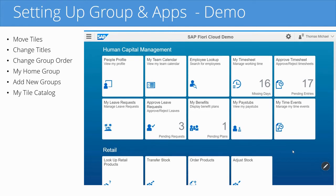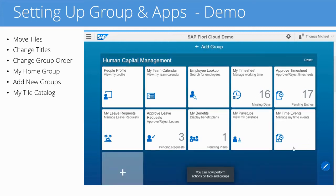So we're back at the home page. Let me show you how you can personalize this home page by either rearranging the tiles, changing the groups or the group order. You start by clicking on this button here at the bottom right to personalize your homepage. Now you're suddenly in change mode, and you can, for example, rearrange the order of your tiles.